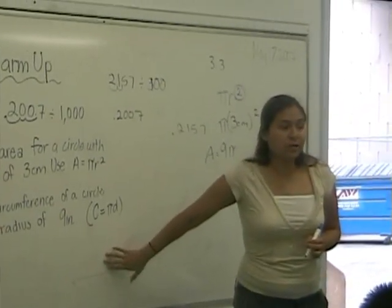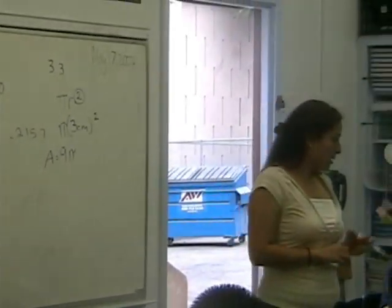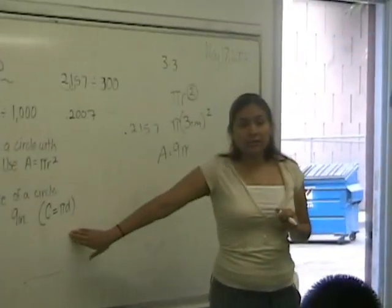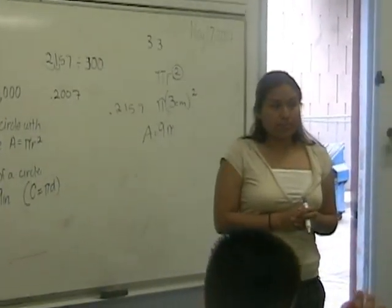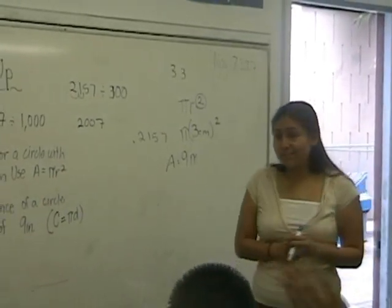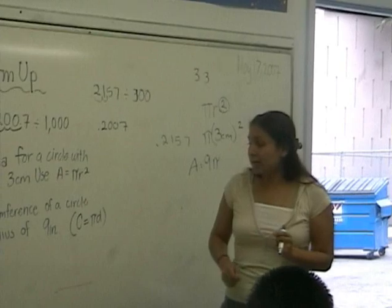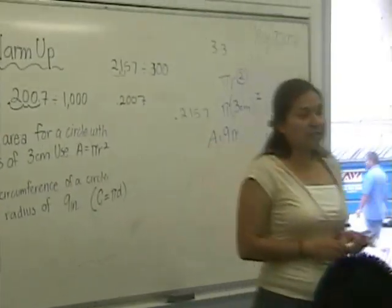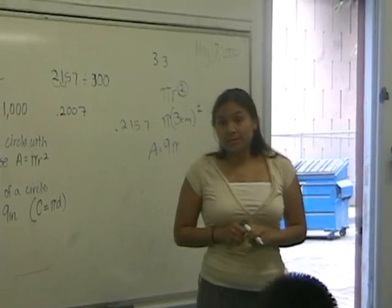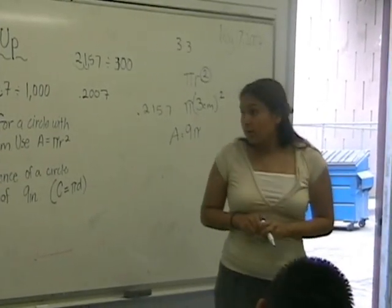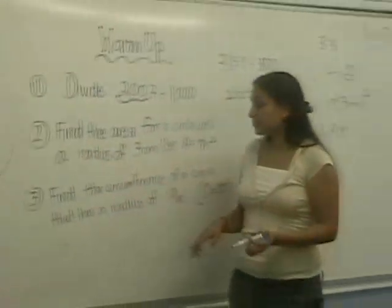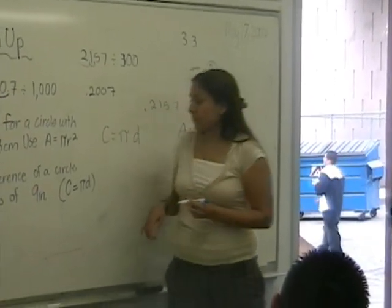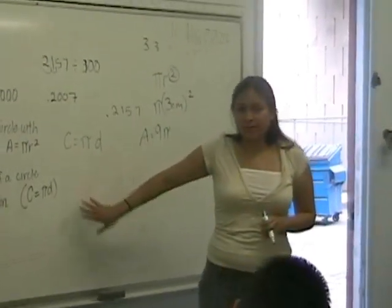The last one is circumference. Do you guys remember how to do circumference? What is the formula for circumference? Circumference is the distance around the circle, right? So this is the formula: circumference equals pi and diameter.